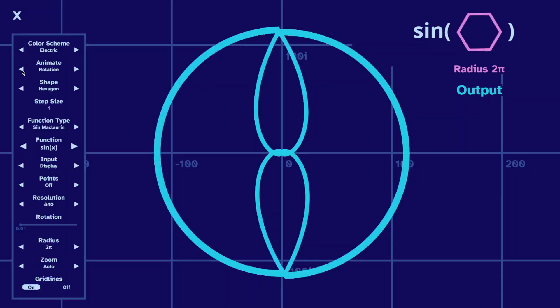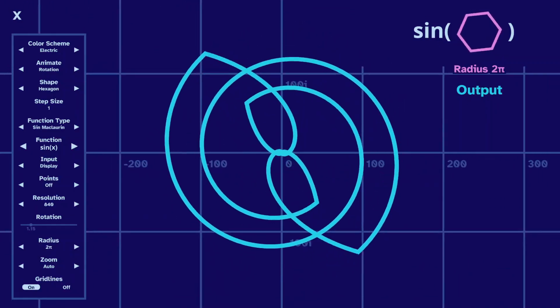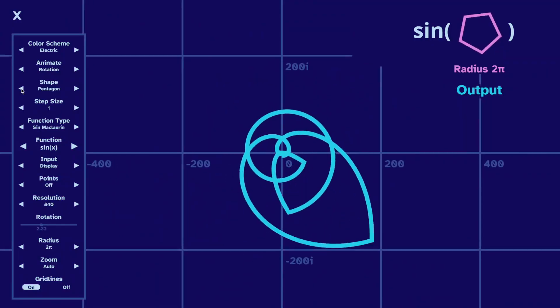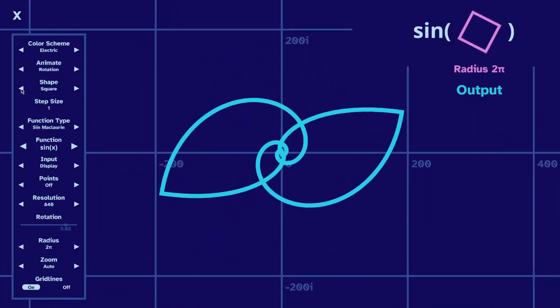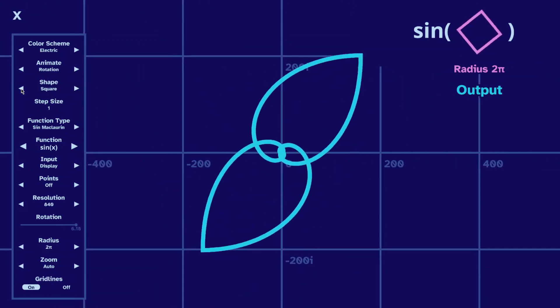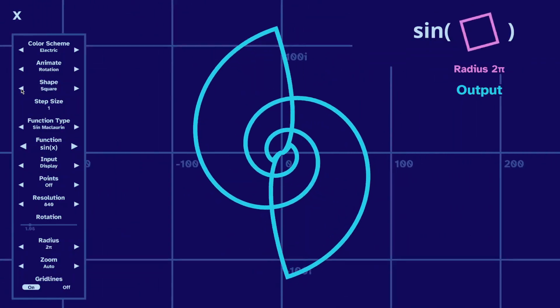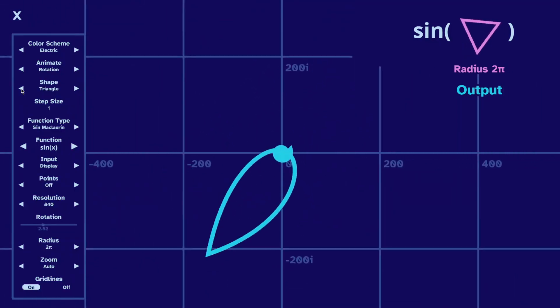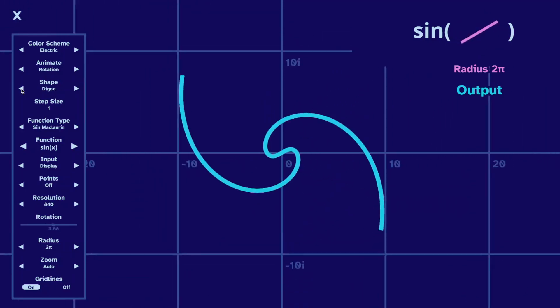For another cool animation, let's rotate the input. Here's a pentagon. And a square, which is my favorite of these. And then a triangle. Here's a triangle. And finally, a diagon.